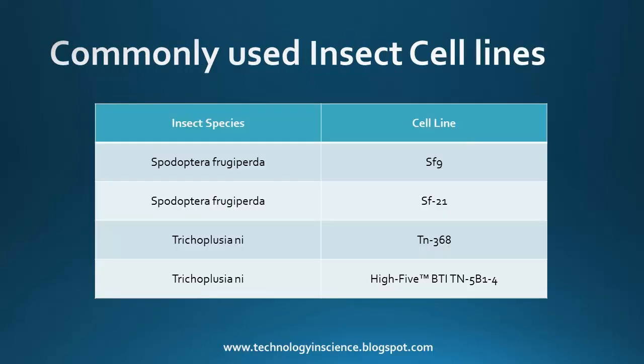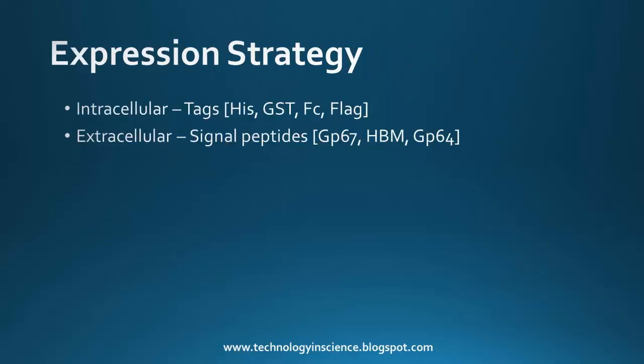The most commonly used cell lines are SF9, SF21, TN368, and Hi5. Protein expression in insect cell lines can be intracellular or extracellular. For intracellular proteins, tags like His-tag, GST, Fc, and FLAG can be used for ease of purification. For extracellular protein expression, signal peptides such as GP67, HBM, and GP64 can be used for secretion of the expressed protein.